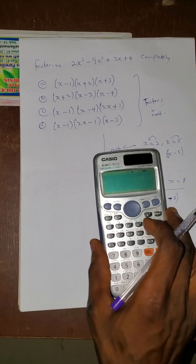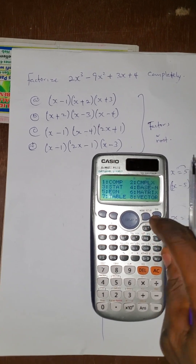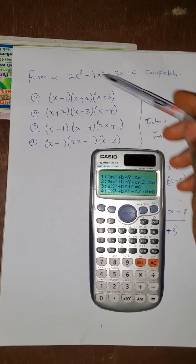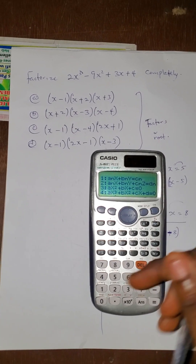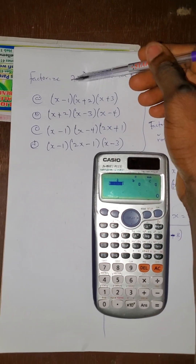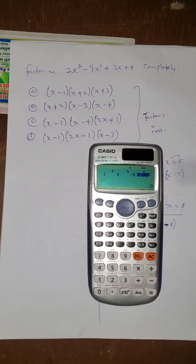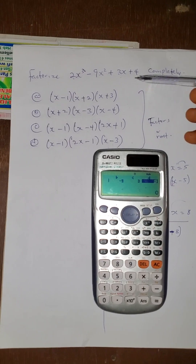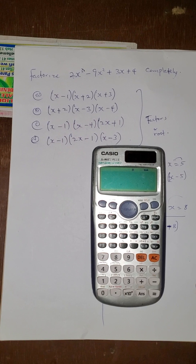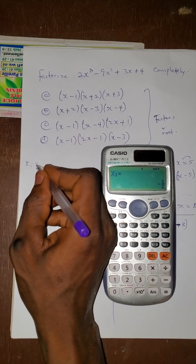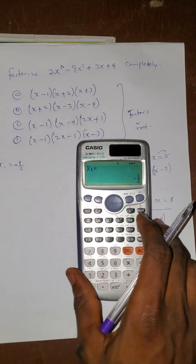Now let us solve this question. Let us find the roots first using the calculator. Press mode, then press equation. The highest power here is 3, so we go with the option where the highest power is 4. Now enter the coefficients: the first coefficient is 2, the next is minus 9, then 3, then 4. Press equals. The first answer x1 is minus 1 over 2, x2 is 4, and x3 is 1.